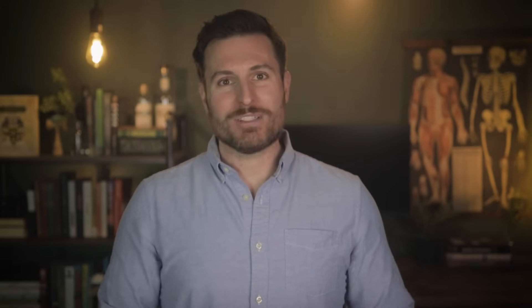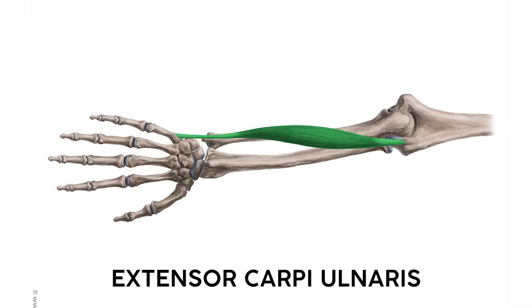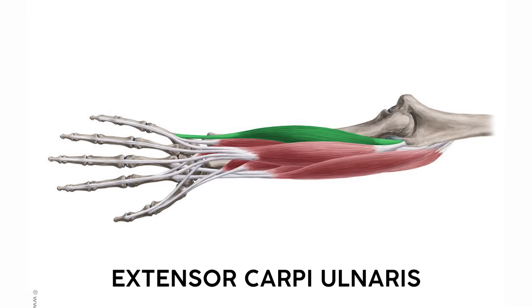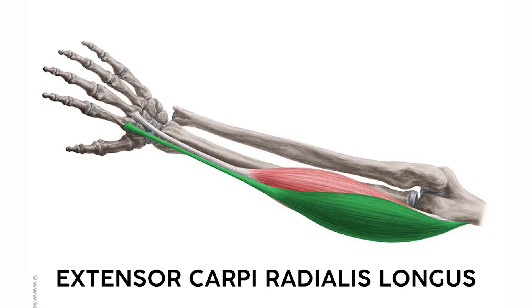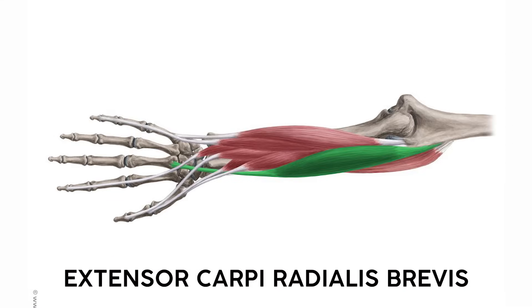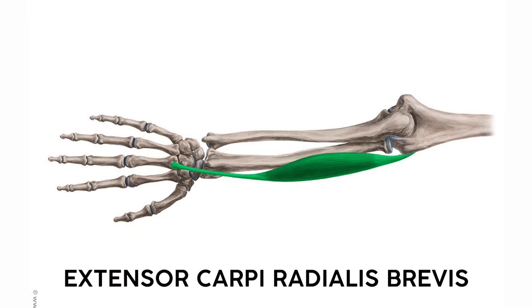Just like the anterior forearm, the posterior side has superficial and deep sections, and they follow the same predictable naming patterns. The anterior arm had all the flexors, so the posterior side has all the extensors — most of the time that leaves us with mirror opposites. Like the extensor carpi ulnaris, which extends the wrist joint and inserts on the ulnar side. Or the extensor carpi radialis longus — it extends the wrist and inserts on the radial side. And while this one is a longus, there's also an extensor carpi radialis brevis that follows the same rules — it's just shorter.